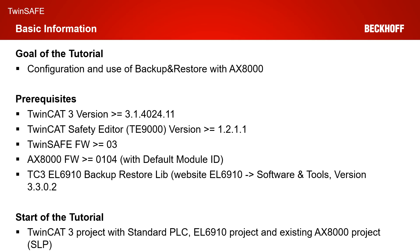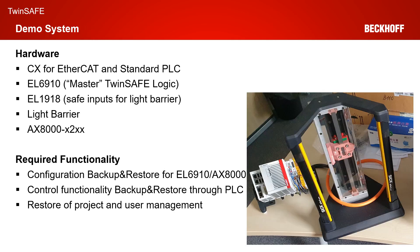The start of our tutorial is a complete TwinCAT 3 solution with a standard PLC project. We have an EL6910 project talking to an existing AX8000 project. In today's tutorial, we use our AX8000 project from our SLP tutorial. As hardware, we are using our CX for EtherCAT and standard PLC. We have an EL6910 as our master TwinSafe logic, a EL1918 connected to a light barrier, and an AX8000 in the X2XX in the SafeMotion version.